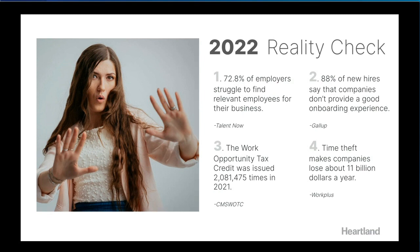What we did is incorporate tax credit screening directly into our software so we can help you identify — before you even engage with a candidate — whether or not they may be eligible for that tax credit. The credit can range between $2,400 and $9,600. We will help do everything except file for it at the end of the year — that is your CPA or tax preparer's job — but I'll get into that a little more as we carry on.